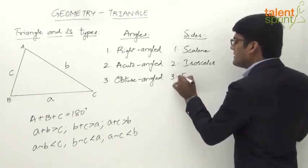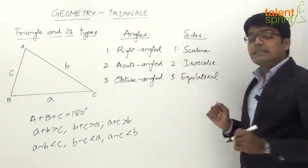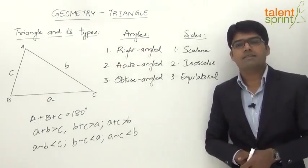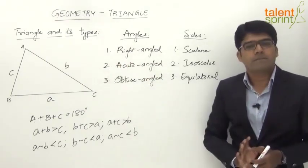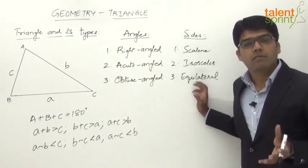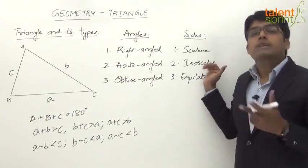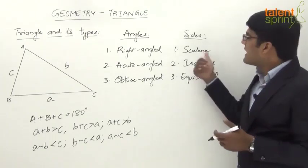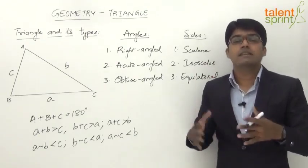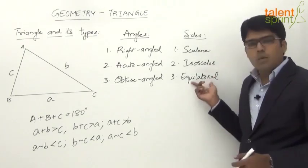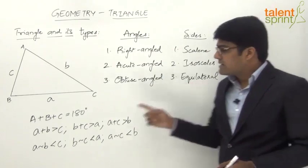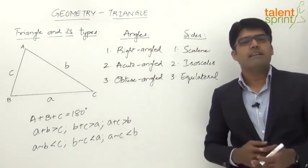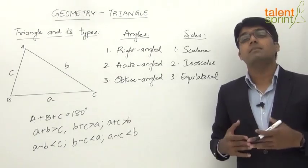The third type based on sides is an equilateral triangle, where all three sides are equal: a equals b equals c. It follows that all three angles are also equal. Since the sum of angles is 180 degrees and all three are equal, each angle must be 60 degrees, because 60 plus 60 plus 60 equals 180 degrees.